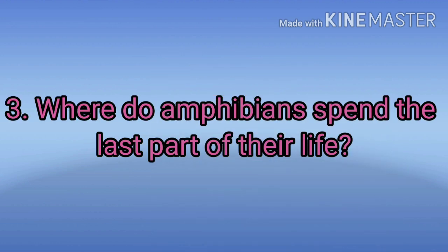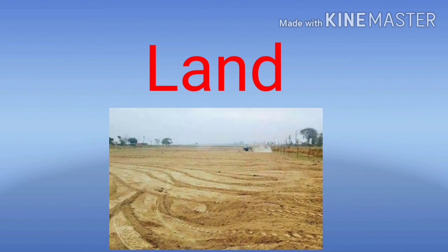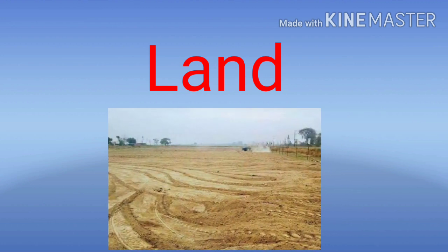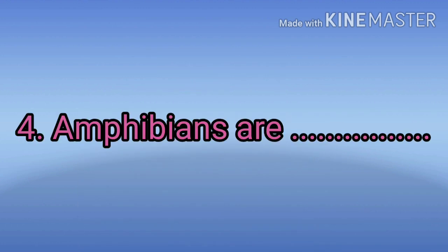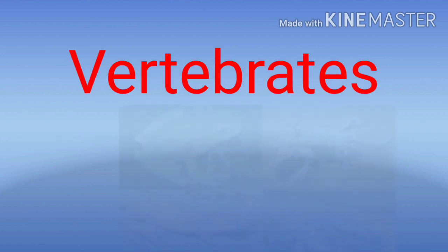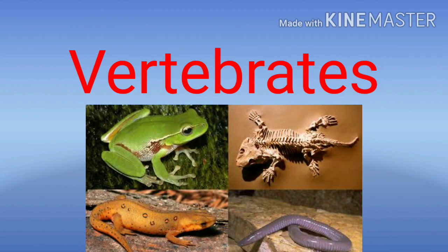Question number 3: Where do Amphibians spend the last part of their life? The answer is land. Question number 4: Amphibians are dashes. The answer is vertebrates.